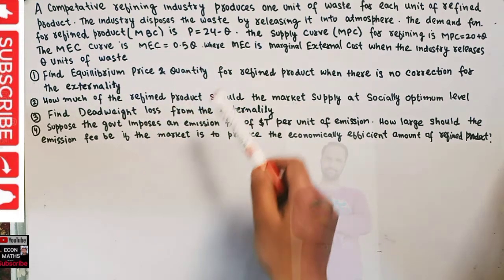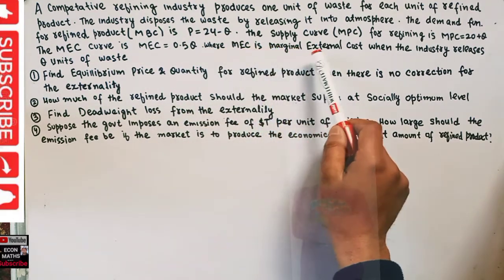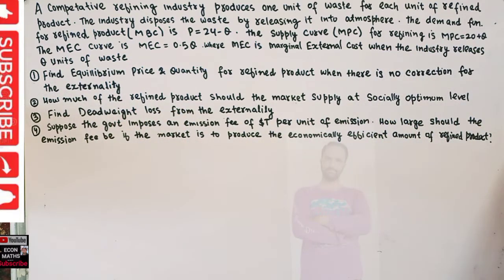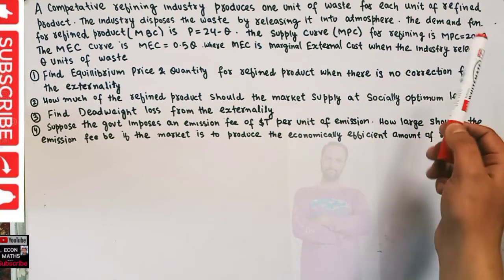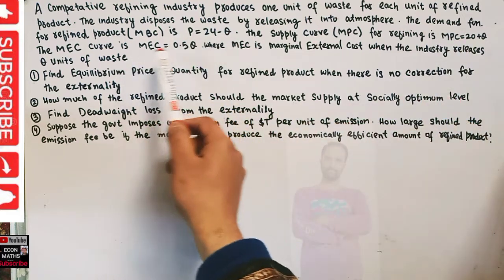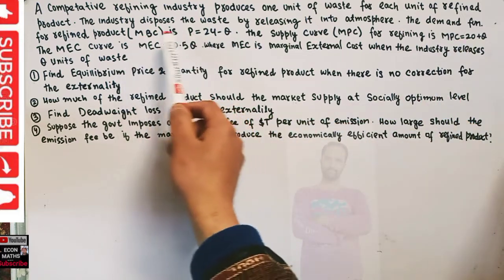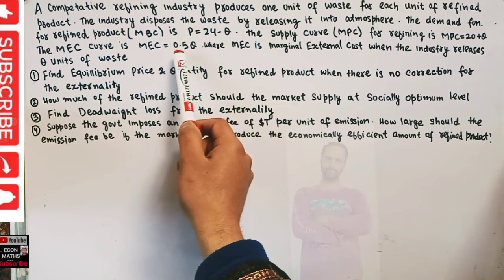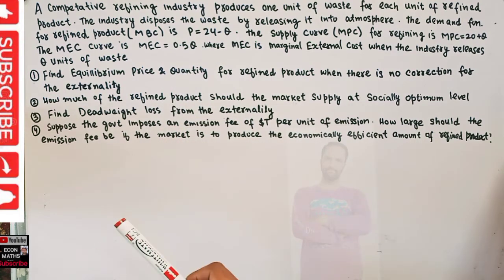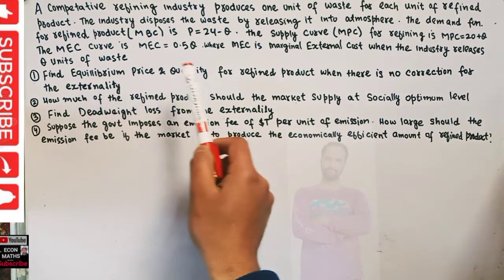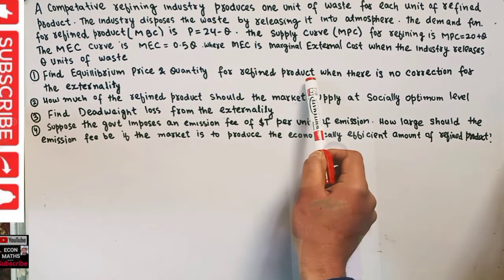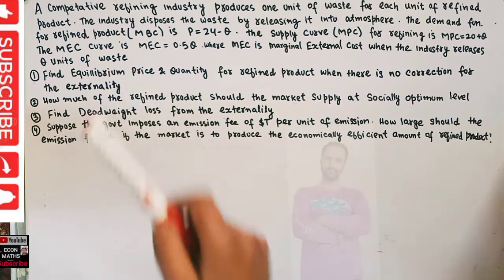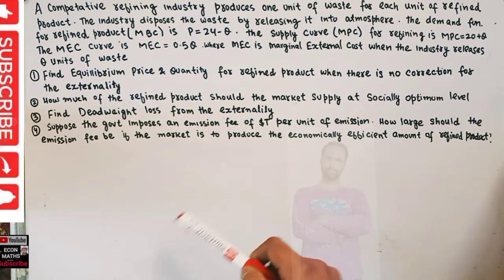Also, the marginal external cost curve is MEC = 0.5Q, where MEC is the marginal external cost when the industry releases Q units of waste. So we have the private cost and also the negative externality — the marginal external cost equal to 0.5Q. We are asked to find the equilibrium price and quantity when there is no correction for the externality.